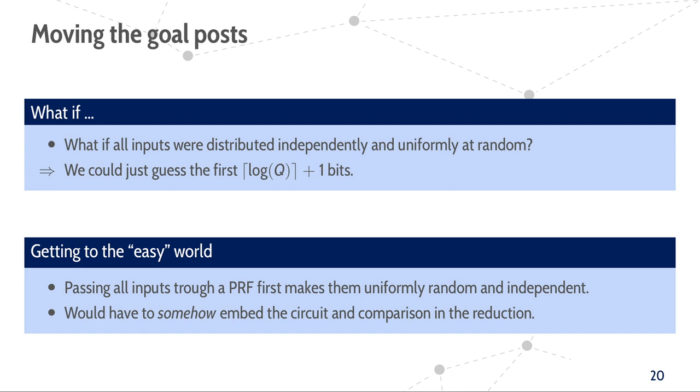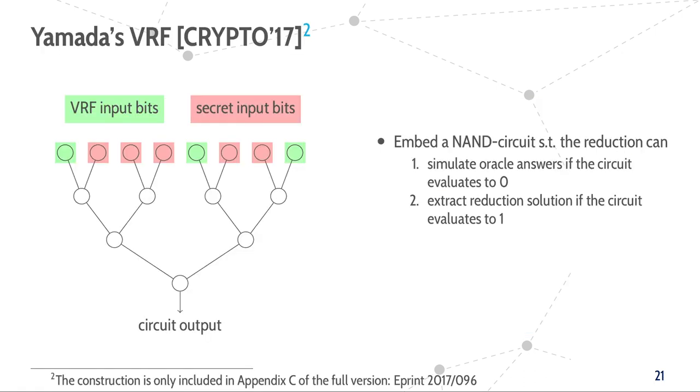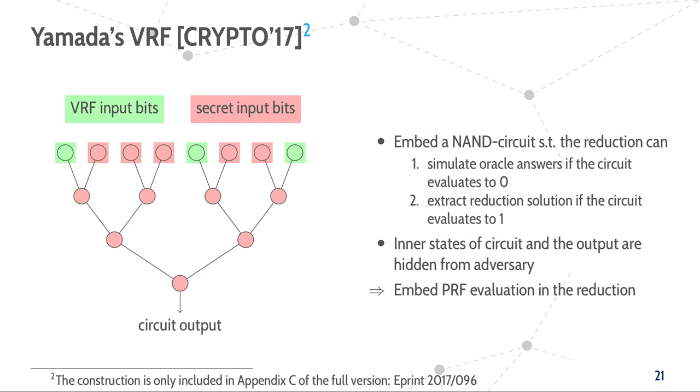Fortunately, one of Yamada's VRFs from Crypto 2017 allows us to do exactly that. More specifically, it allows us to embed an arbitrary NAND circuit in the VRF such that the reduction can simulate an evaluation of the VRF if and only if the circuit evaluates to 0, and that it can extract a solution to the underlying hardness assumption if and only if the circuit evaluates to 1 on the challenge input x star. This embedding hides some chosen input bits, and also the internal state and the output bit of the circuit from the adversary. Thus, we can embed the evaluation of the PRF and the comparison of the guess by setting the PRF key and the guess as the secret input bits. Then, the partitioning proof we discussed before works out without any flaws.